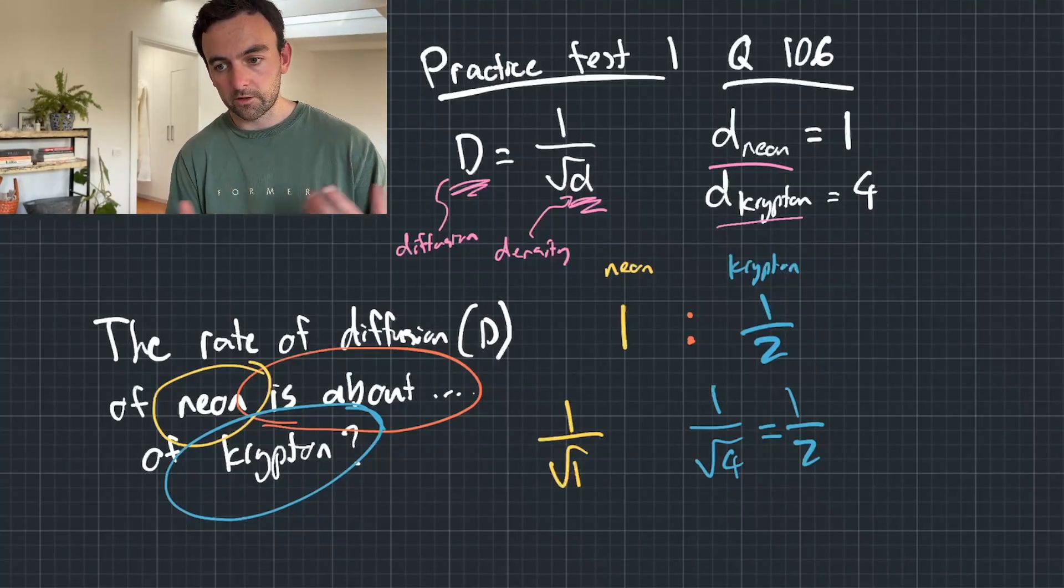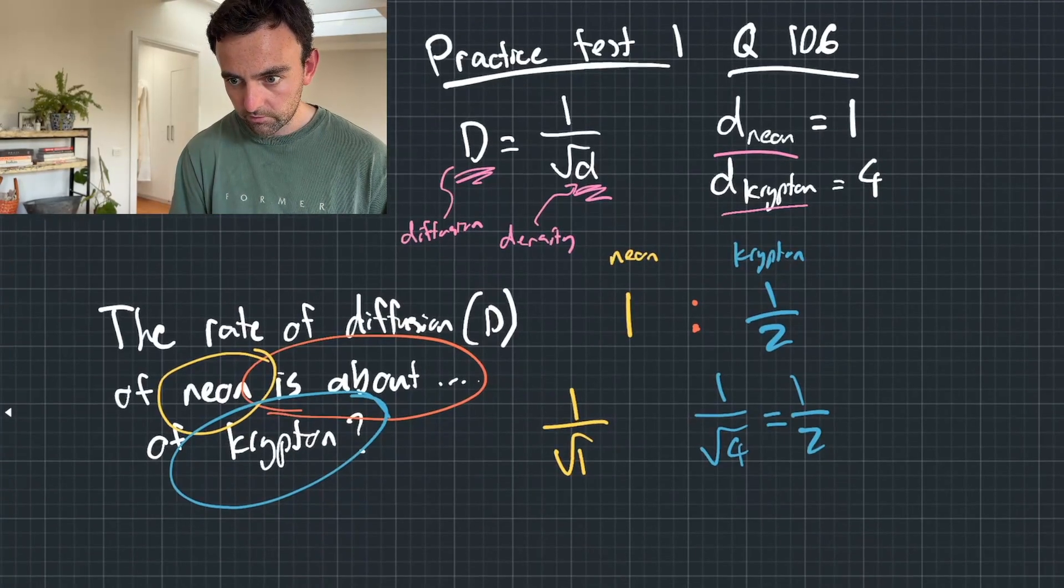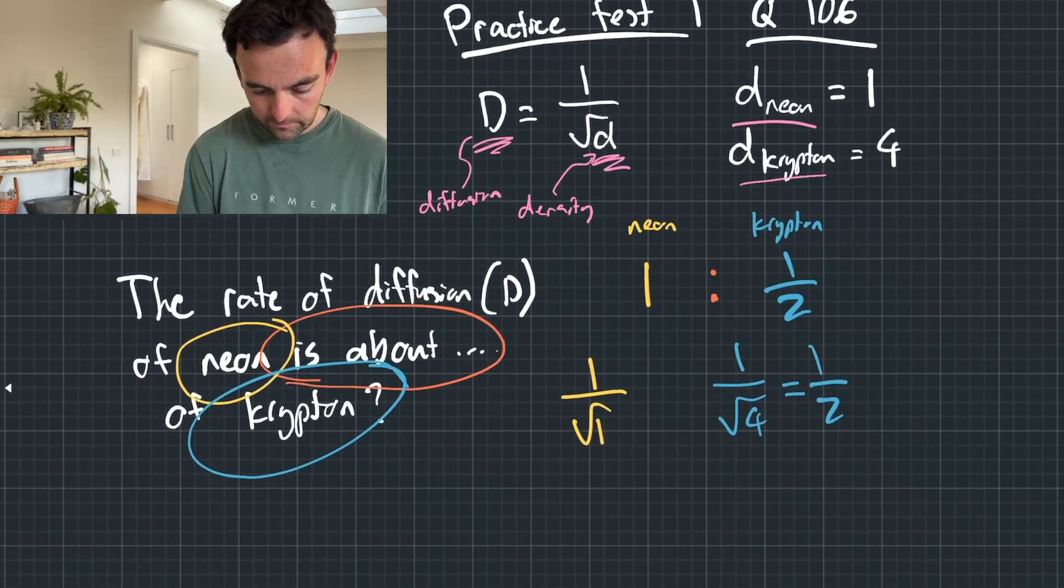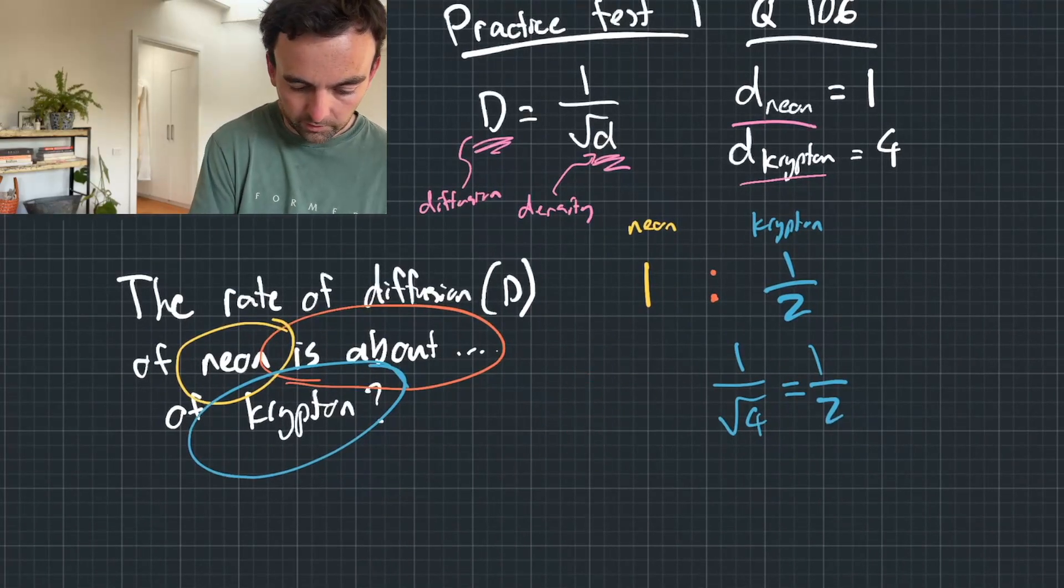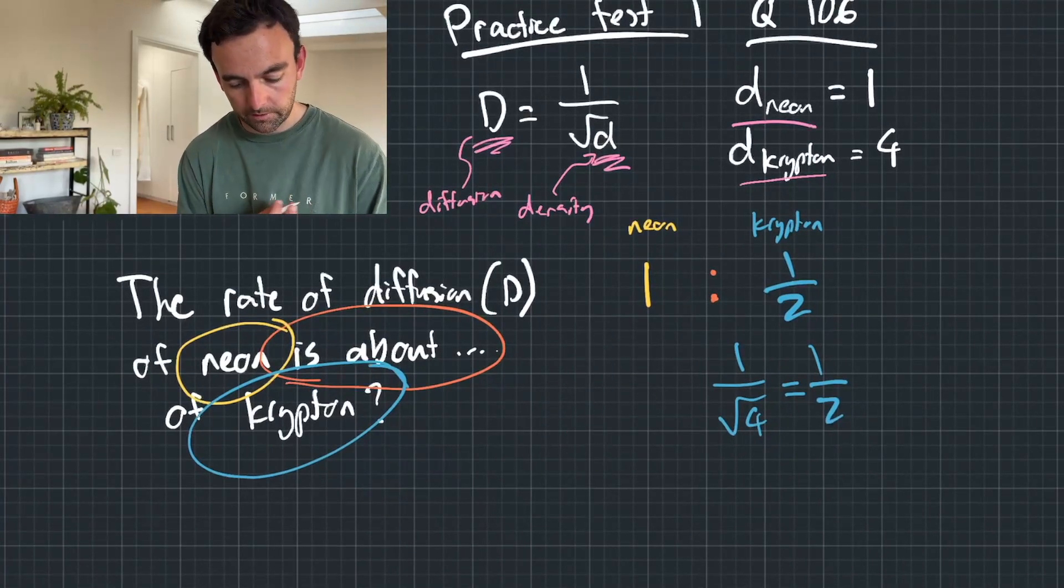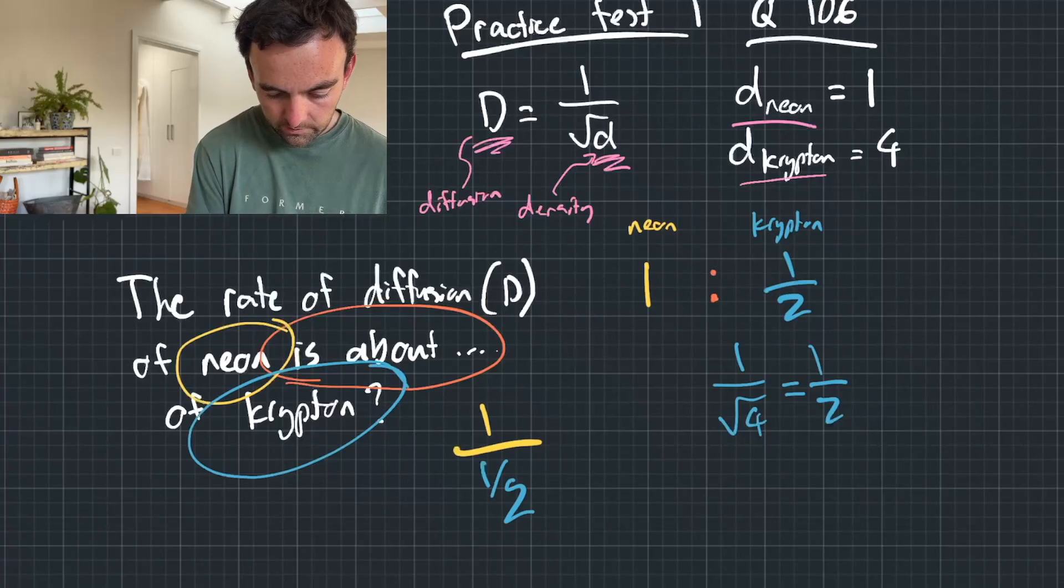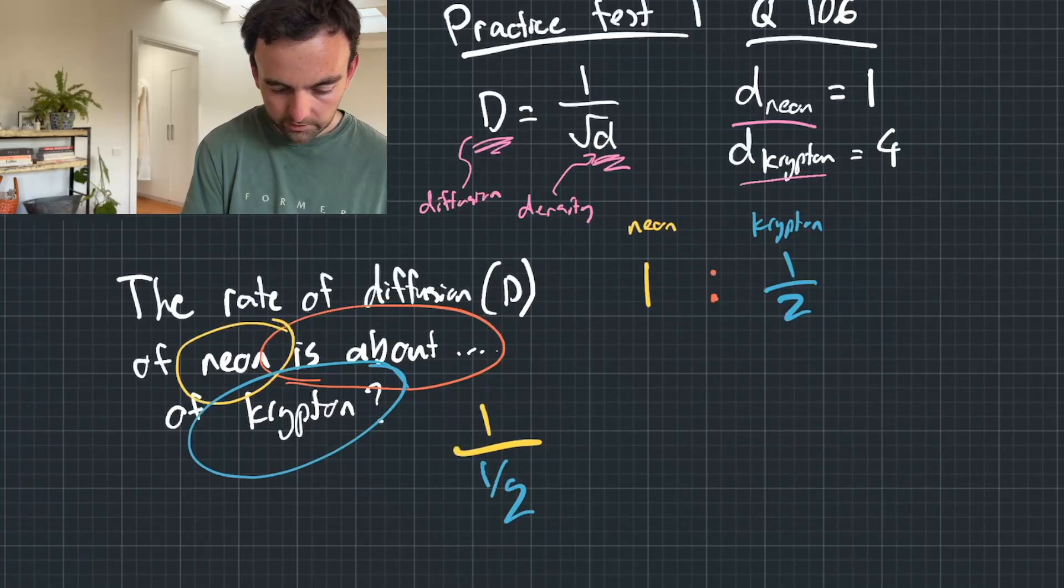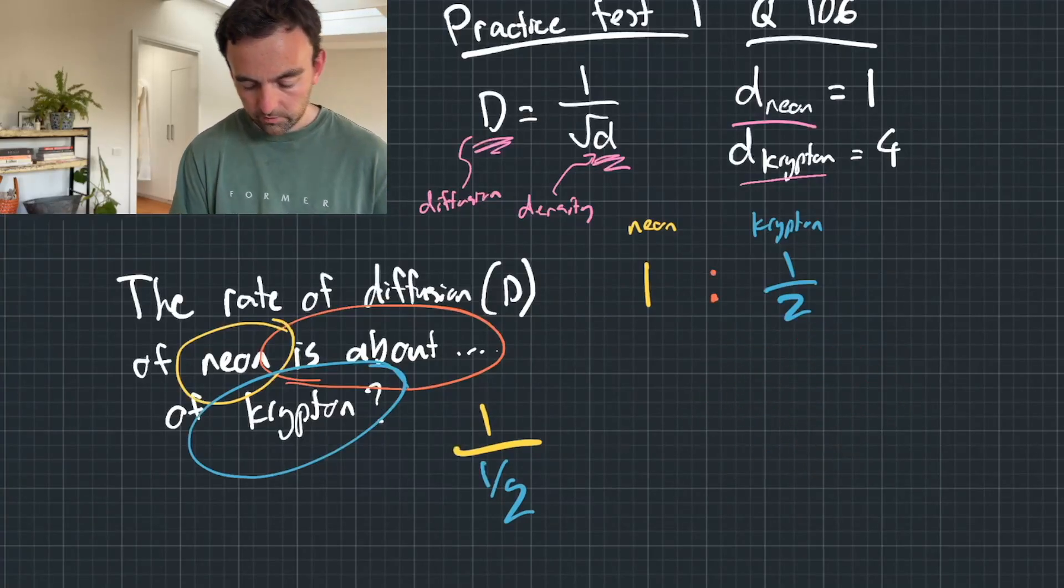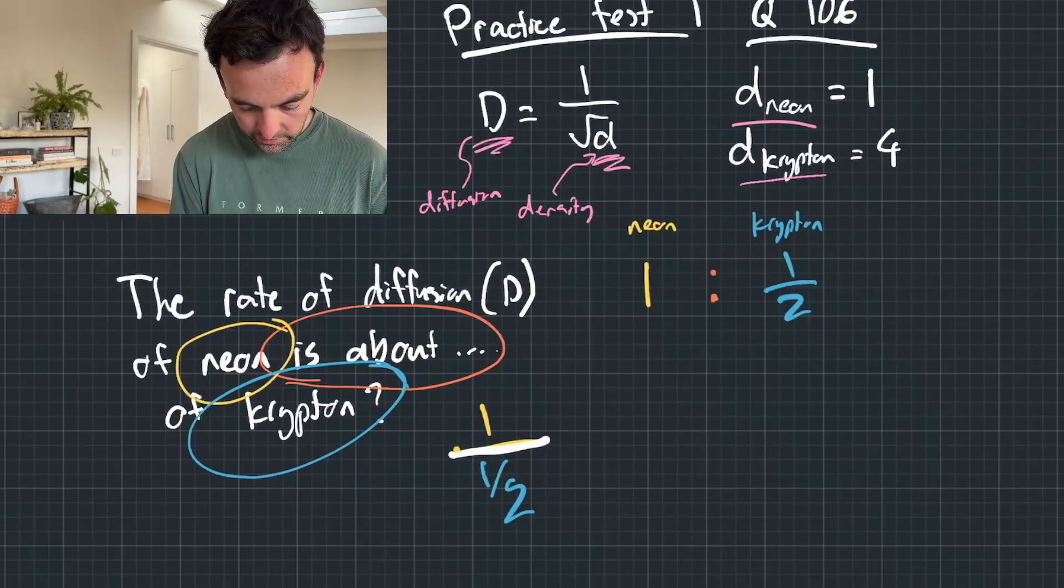Now we would just divide these. So I just make the thing on the left the numerator. So I'll just scroll down a little bit. I might actually just rub that one out. So the thing on the left becomes the numerator. The thing on the right becomes the denominator.